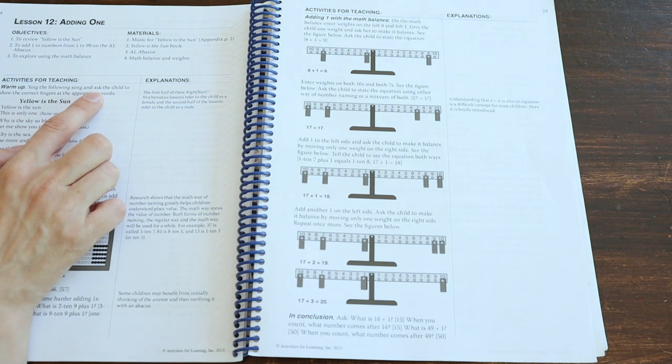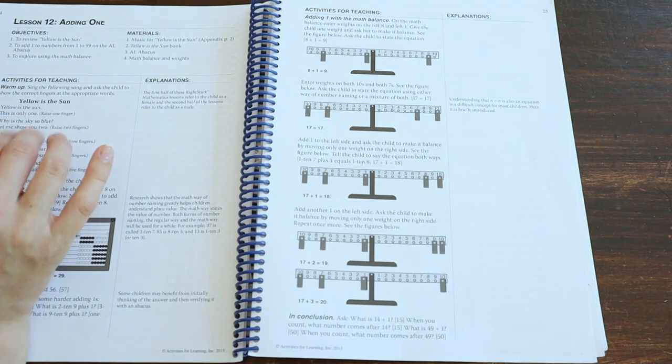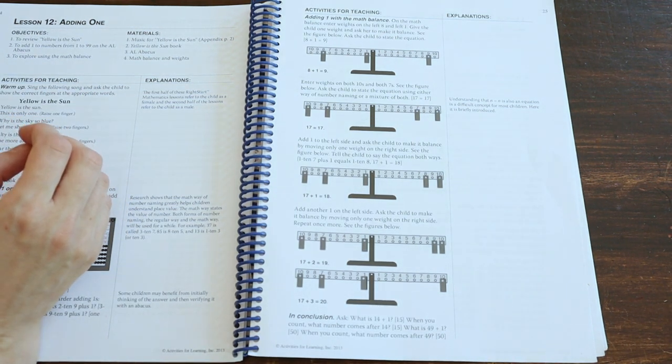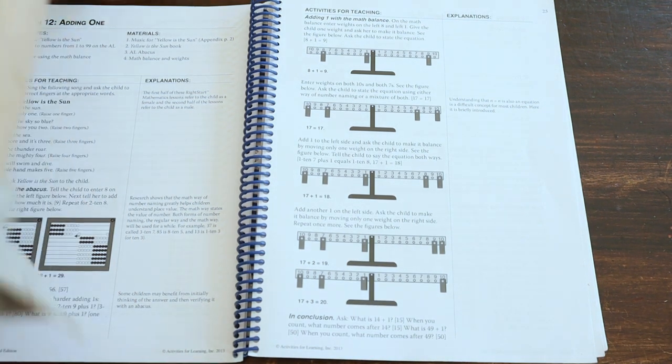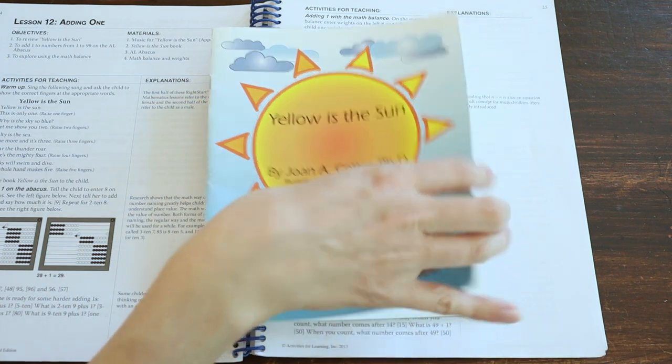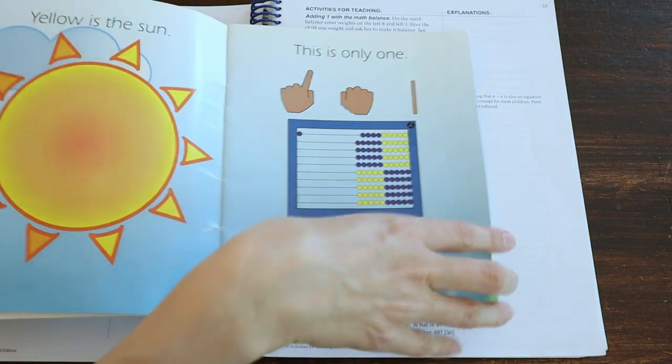At the beginning of each lesson starts with a warm-up. They have lots of songs, not as many as level A, I would say, but you do sing them. So here they talk about yellow is the sun, which is this book, and you sing the song together.